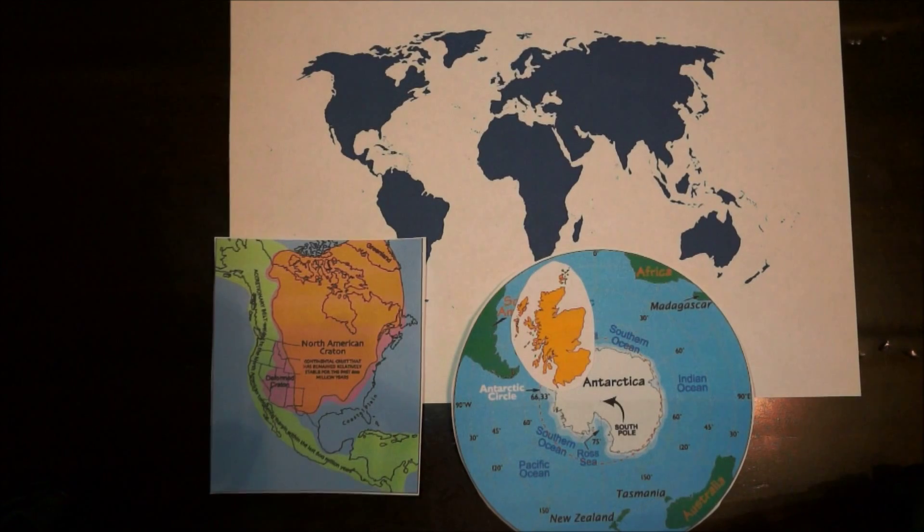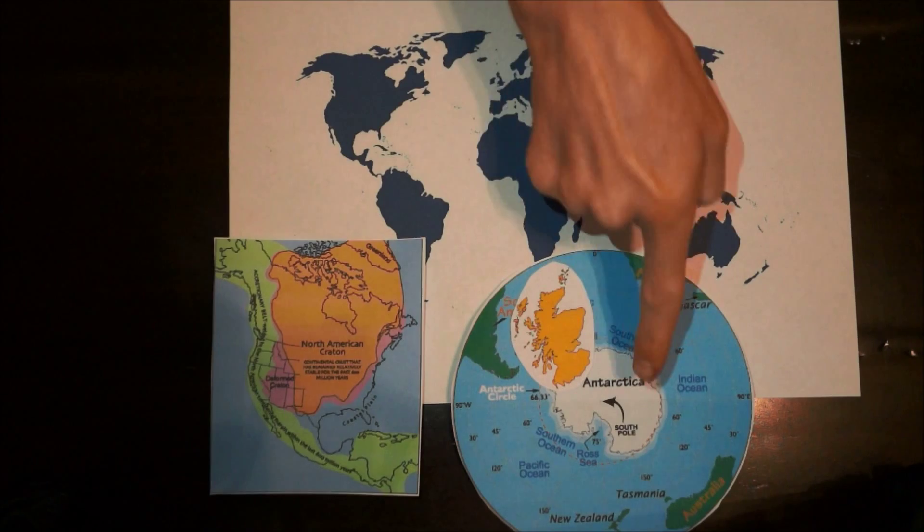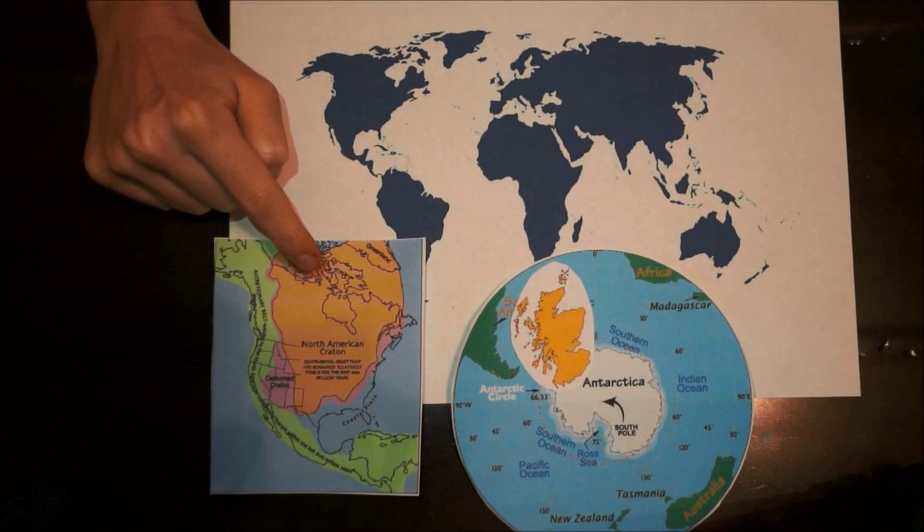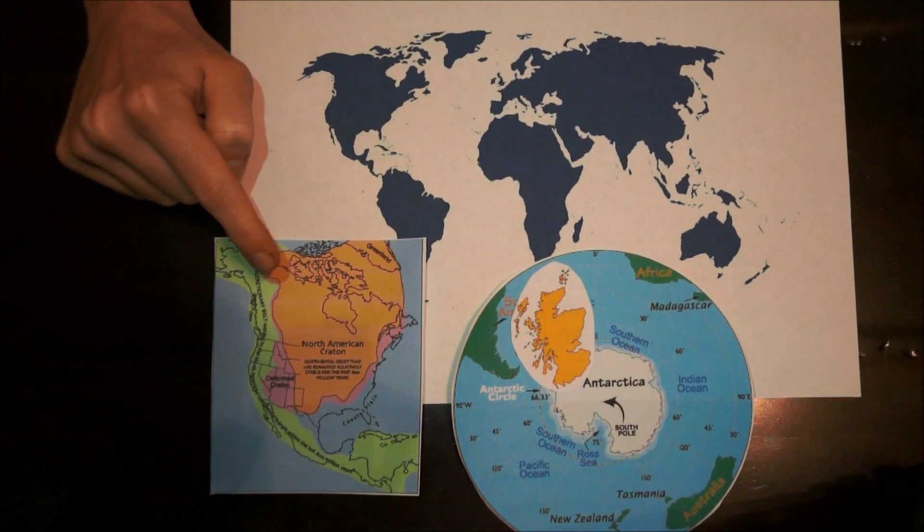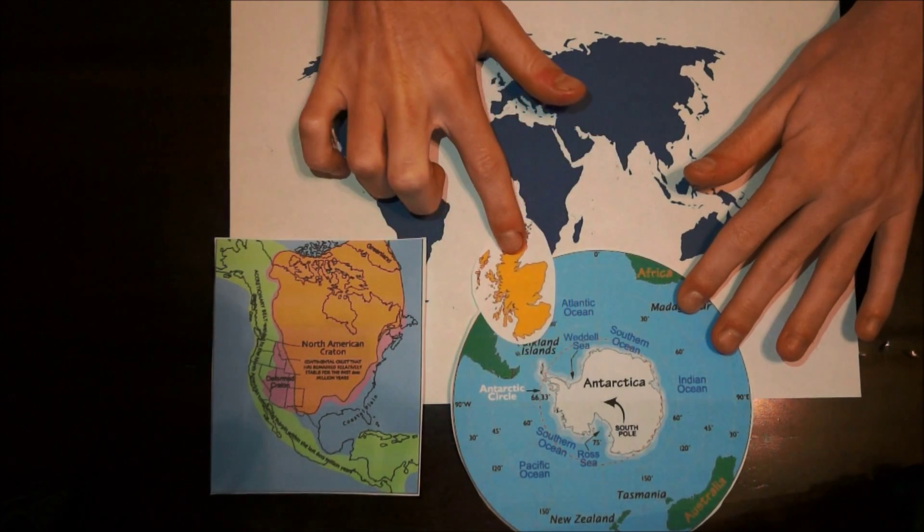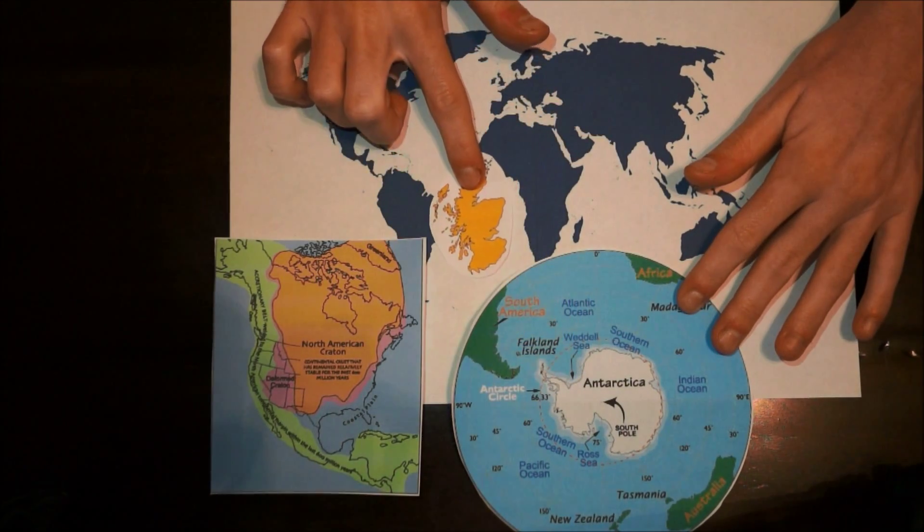About 50 million years ago, Scotland formed along the South Pole and was part of a continent called Laurentia, which formed the ancient geological core of the North American continent. Over time, Scotland moved northwards and crossed the equator.